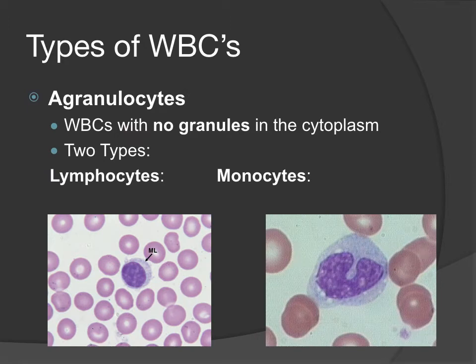Our last two cell types fall under the category of agranulocytes, meaning no granules in the cytoplasm. On the left we have lymphocytes, and on the right monocytes. The cytoplasm is distinctly without granules. In monocytes you'll see some pale open areas that are vacuoles — not granules — those areas that are not staining are those little vacuoles.